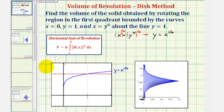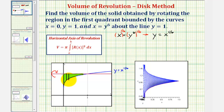The region that we're rotating about the line y equals one is this region here. Whenever using the disk method to find volume, it's helpful to sketch a rectangle that, when rotated about the line of rotation, would give us one disk or one circular cylinder representing the approximate volume of one slice of our solid.